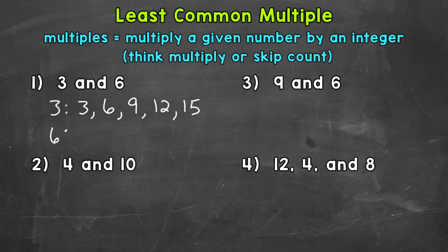So let's write some multiples of six. So again, think multiply or skip count. So six times one is six, six times two is 12, times three is 18, times four is 24, and then times five is 30. So we did five multiples for each.